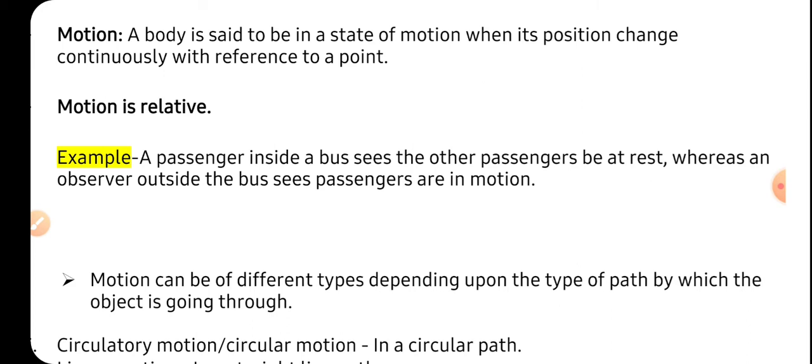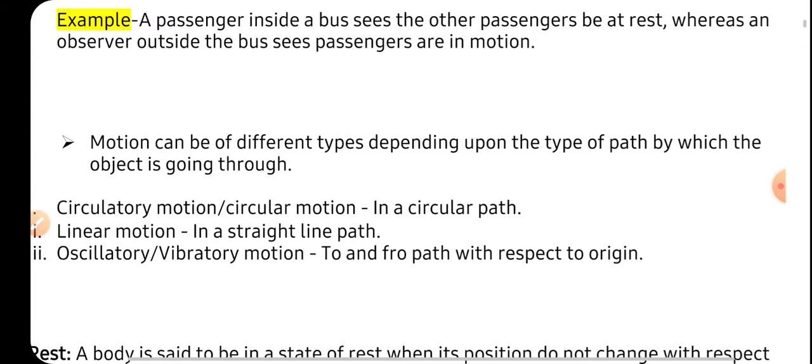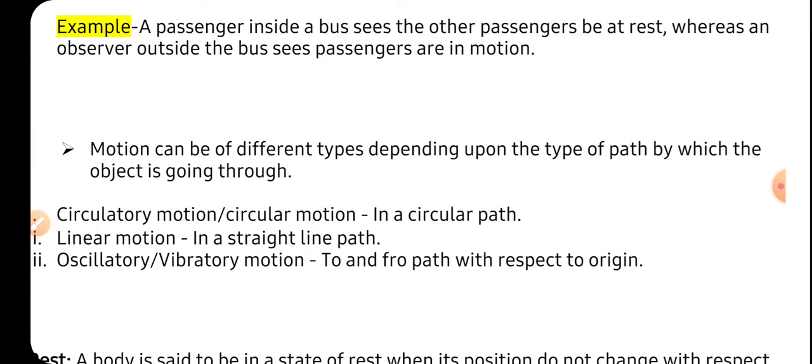Let us proceed to a few types of motions. There are various types of motion like circulatory motion - when the body is moving in a circular path, we say that body is in circular motion. Linear motion - when the body is moving in a straight line, like march past or parade of soldiers moving in a straight line, that is linear motion. Oscillatory motion - the best example is a pendulum. The pendulum oscillates, moves to and fro from the origin. That is oscillatory motion. Vibratory motion is also similar to this. These are the types of motion.